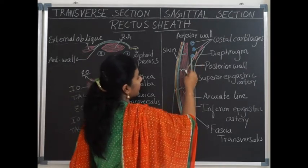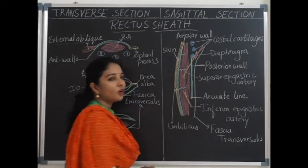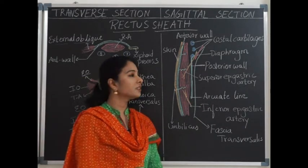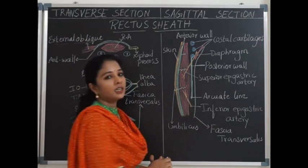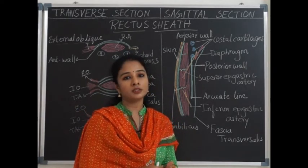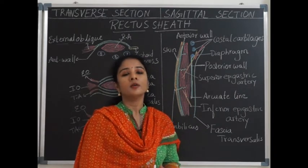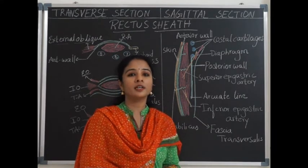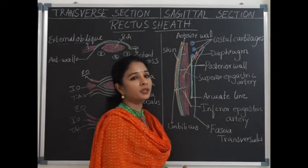There are venae comitantes — superior epigastric venae comitantes and inferior epigastric venae comitantes — which run along with their respective arteries. The nerves within the rectus sheath are the lower six thoracic nerves. The main function of the rectus sheath is to prevent undue bowing of the rectus abdominis muscle, strengthening and giving support anteriorly since there are no bones in the anterior abdomen to protect the internal organs.